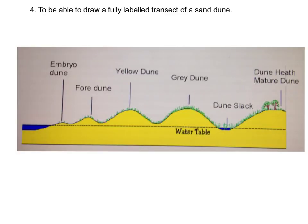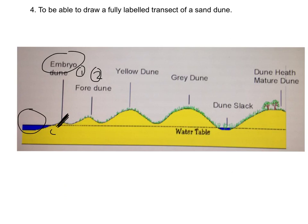Aim four is to draw a fully labelled transect — another word for a cross section — of a sand dune. The diagram shows how the ridges or sand dunes change with distance from the sea. Starting nearest the sea, we have the embryo dune where driftwood traps sediment and it builds up. Over time sediment builds up further into what's called a foredune — the second stage — which starts to get vegetation: a particular species called marram grass, spelled M-A-R-R-A-M.